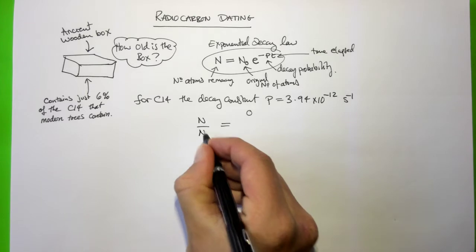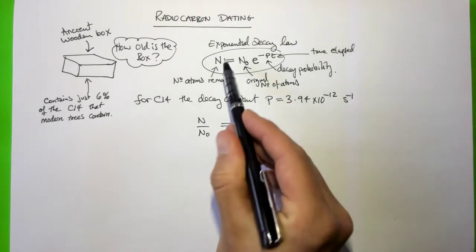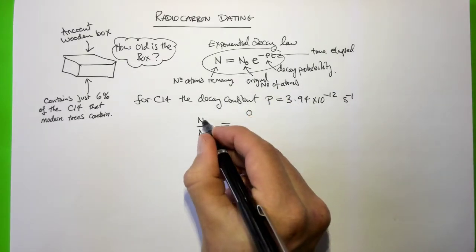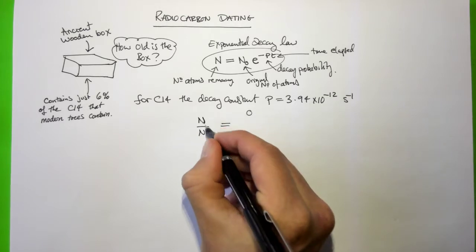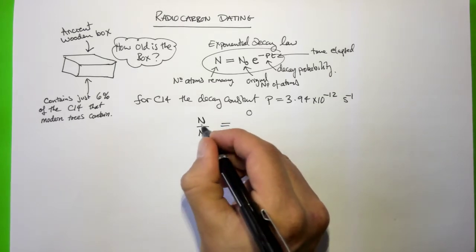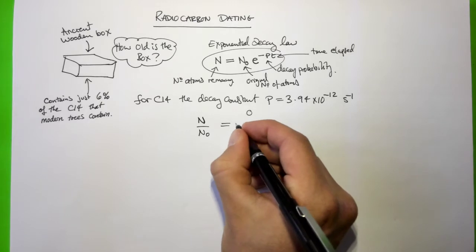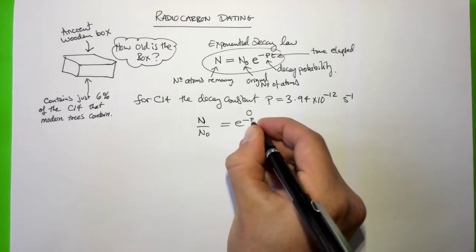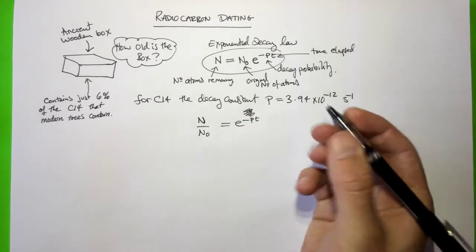So let's just first bring the n over n0 over to the left. That gives us n over n0, the ratio of the amount of atoms left to the original number, and this is going to be our 6%, this is the ratio remaining, equals e to the minus Pt. Let's get rid of that atom from up there for now.